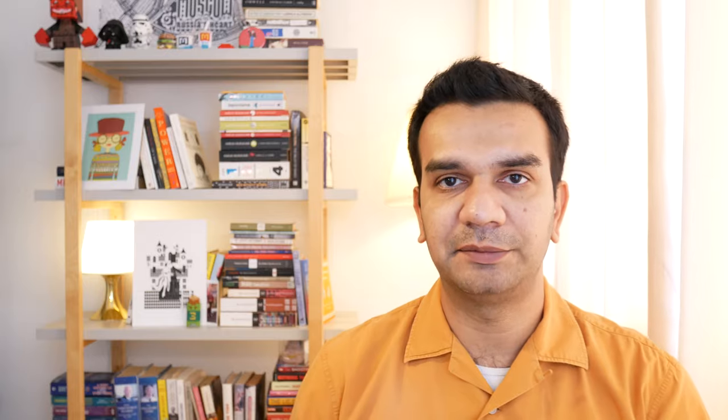This leads to the next concept: the size of the store plays a role. If a store has higher total sales, it matters more than one with lower total sales. That is where the next measure, ACV — All Commodity Value — comes in. ACV is simply the total sales of a store over a period of one year.